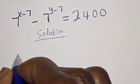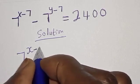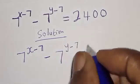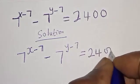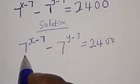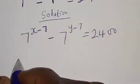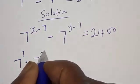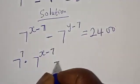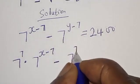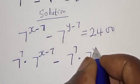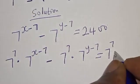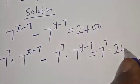We have the given equation: 7 raised to power x minus 7, minus 7 raised to power y minus 7, is equal to 2400. Let's try to manipulate this by multiplying both sides by 7 raised to power 7. Then we have 7 raised to power 7 multiplied by 7 raised to power x minus 7, minus 7 raised to power 7 multiplied by 7 raised to power y minus 7, equal to 7 raised to power 7 multiplied by 2400.